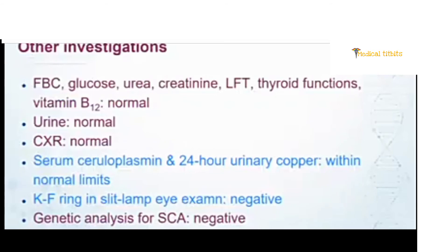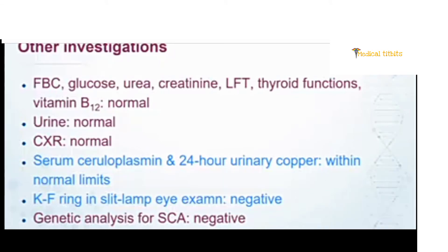Biochemical investigations including full blood count, glucose, urea, creatinine, B12, thyroid, serum ceruloplasmin, and 24-hour urinary copper were all normal. Kayser-Fleischer rings on slit-lamp examination were negative. Wilson's disease was high on the differential given the patient's phenotype — dystonia, choriform movements, and cerebellar ataxia — but all biochemical results were normal. Genetic analysis for several SCAs was also negative.